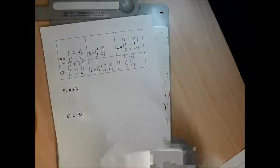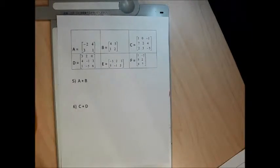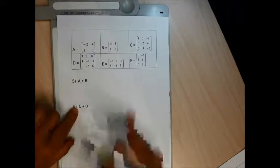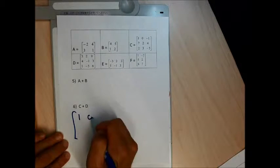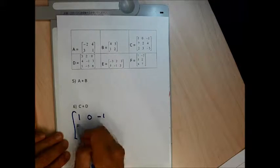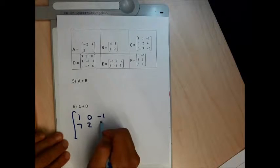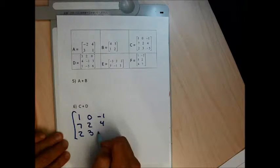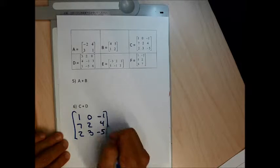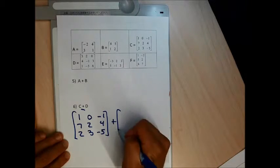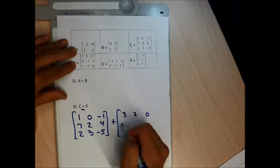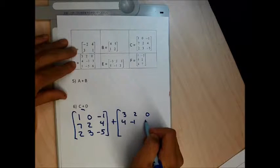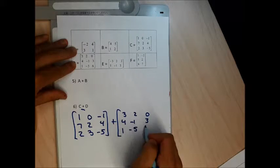So on my next page, I'm going to do number 6, which is C plus D. I'm going to write this without the letters. In place of C, the matrix is: top row 1, 0, negative 1; second row 7, 2, 4; last row 2, 3, negative 5. Then the plus sign. In place of D: 3, 2, 0, 4, negative 1, 3, 1, negative 5, and 6.